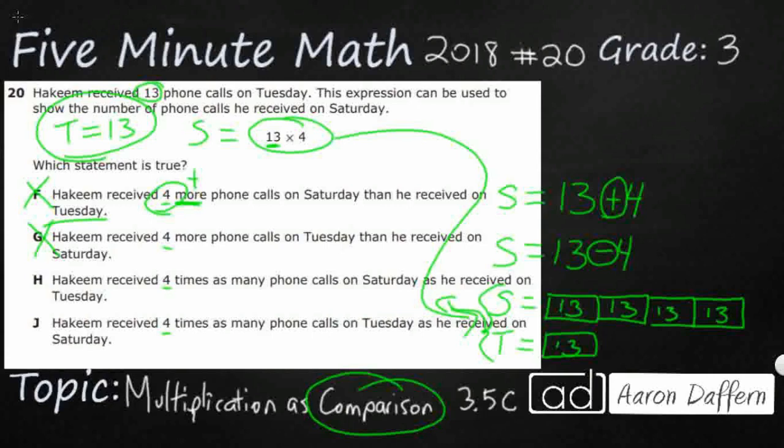Let's just take a look at J. And J, you see, he's got the days flipped. So now they're going to say he received four times as many on Tuesday than he received on Saturday. So now what we're going to do here is we'll take our Tuesday. And that's going to be our box of 13. And what we're going to do, we're going to take our Saturday. We're going to have to cut that up into four little chunks.